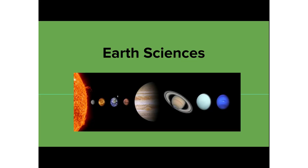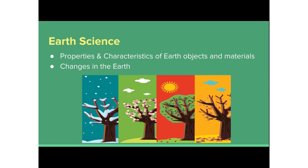What is Earth Science about? This strand helps children learn more about our planet by interacting in direct contact with Earth objects, events, and nature. Through Earth Science, children will learn about the properties and characteristics of Earth objects and materials and also changes in the Earth.